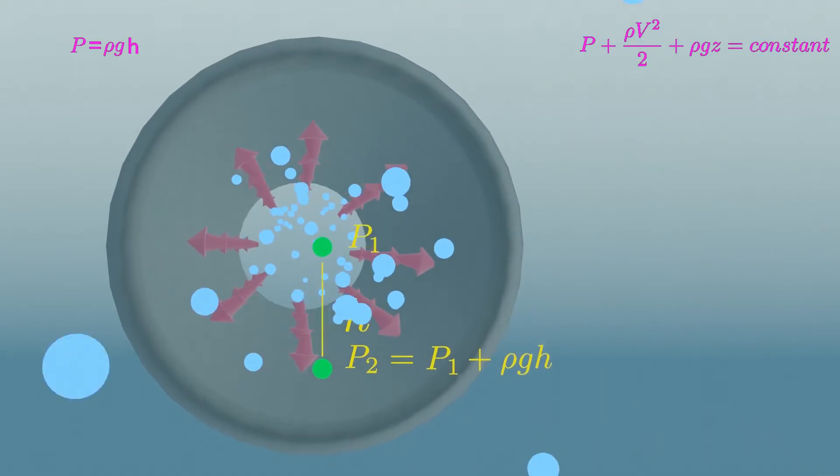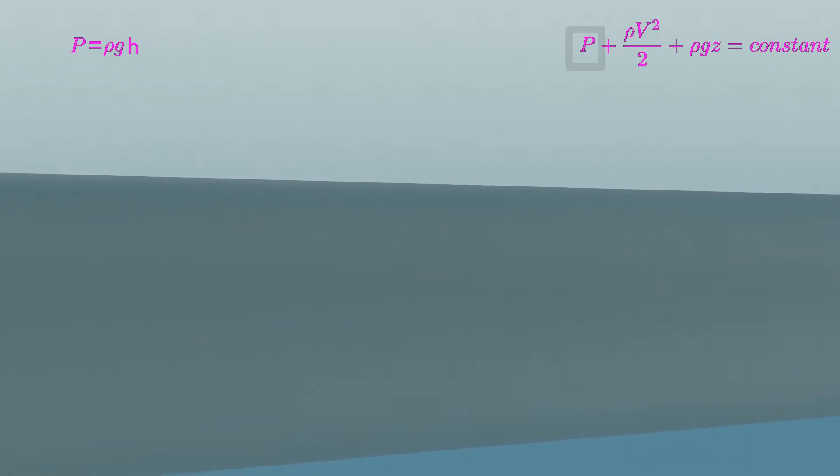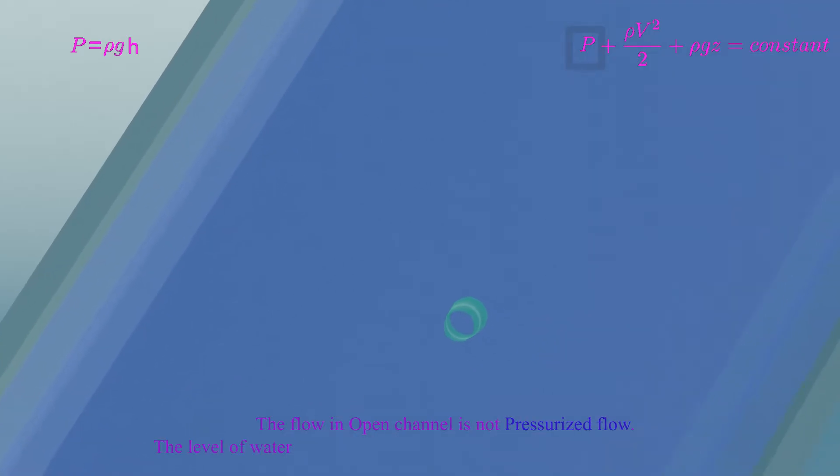You can use piezometer tube to visualize static pressure. Use it on open channel flow, since the flow is not pressurized. The level of water here in this case would be same as that of water surface.